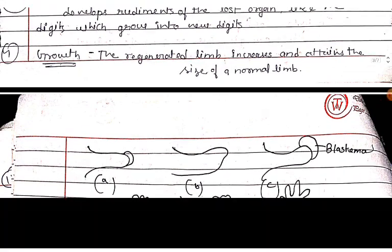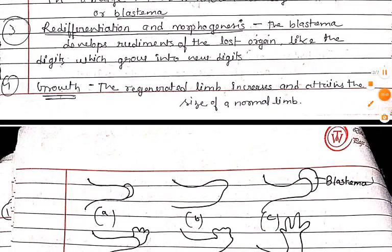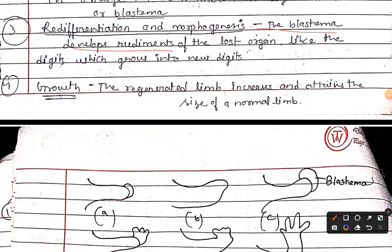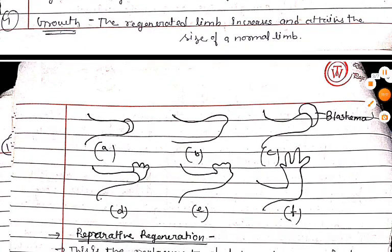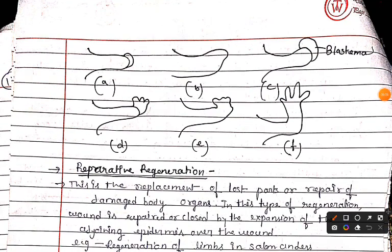Next comes redifferentiation and morphogenesis. The blastema develops rudiments of the lost organs, like digits which grow into new digits, and all body parts are regenerated from the blastema. When we talk about growth, the regenerated limb increases and attains the size of a normal limb. This completes the process of epimorphic regeneration.